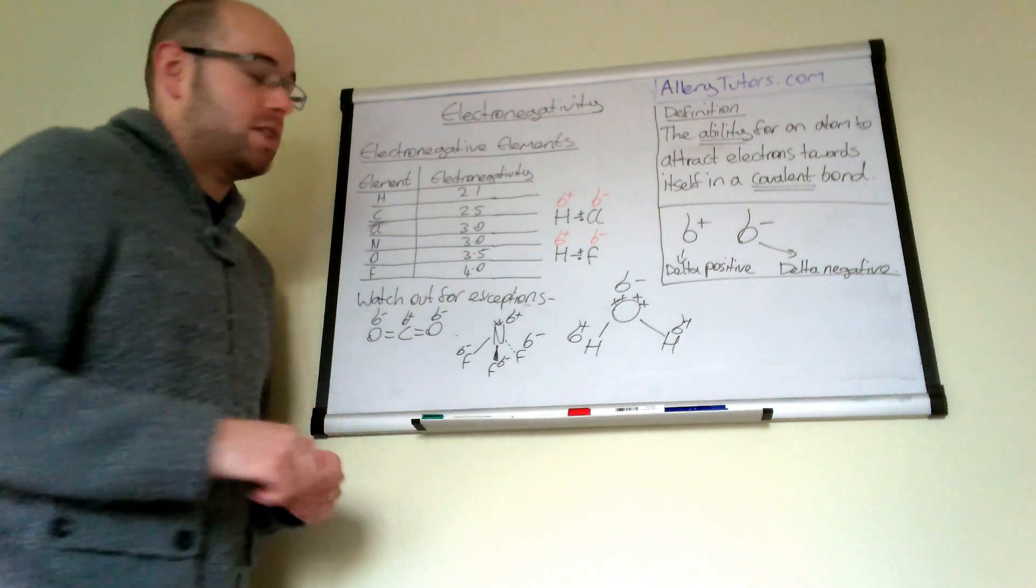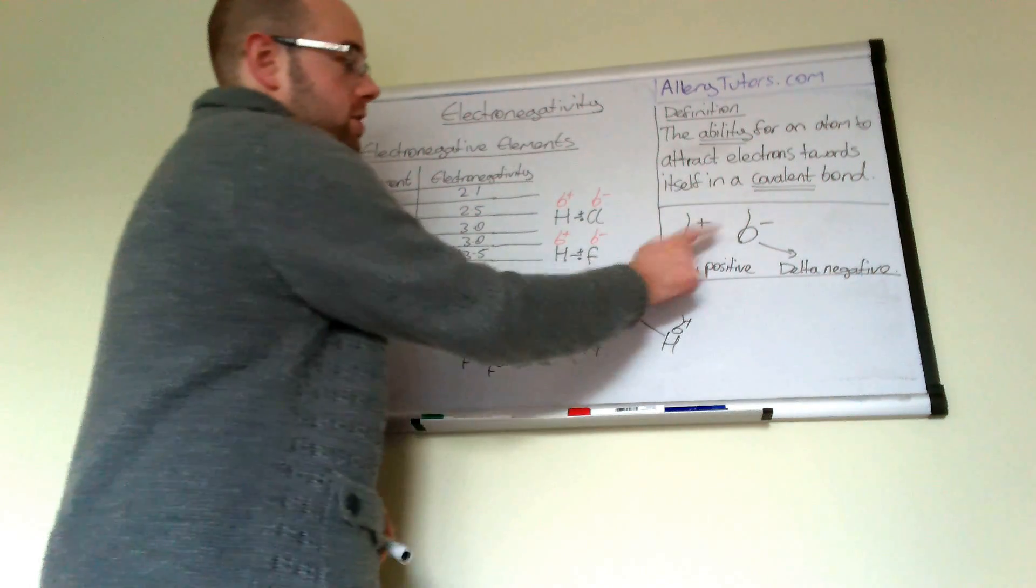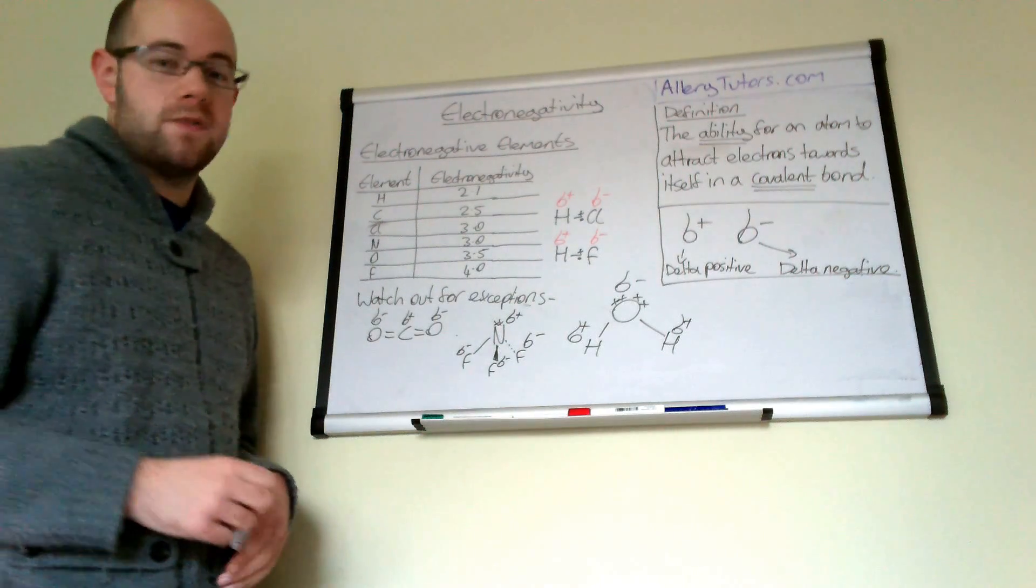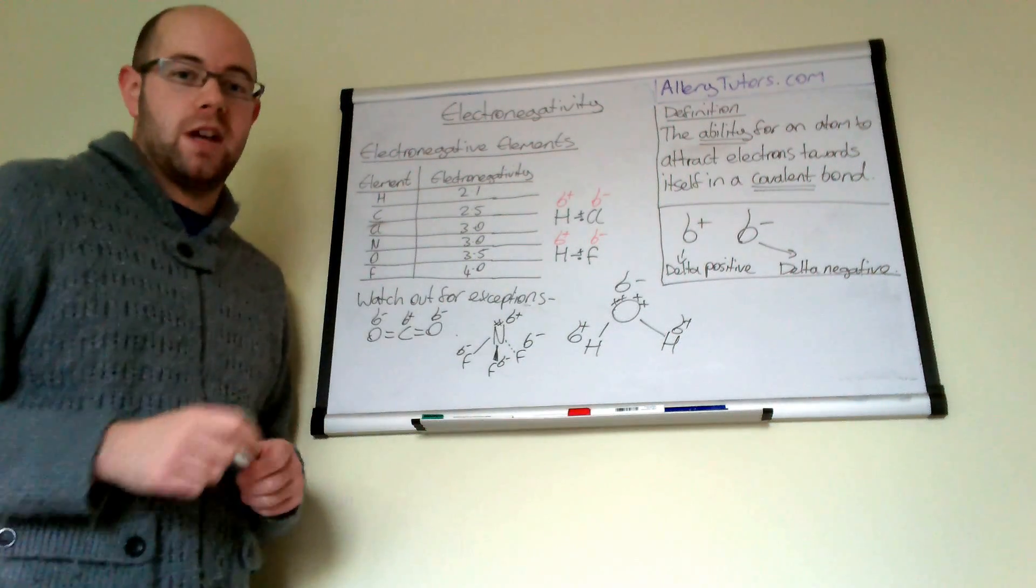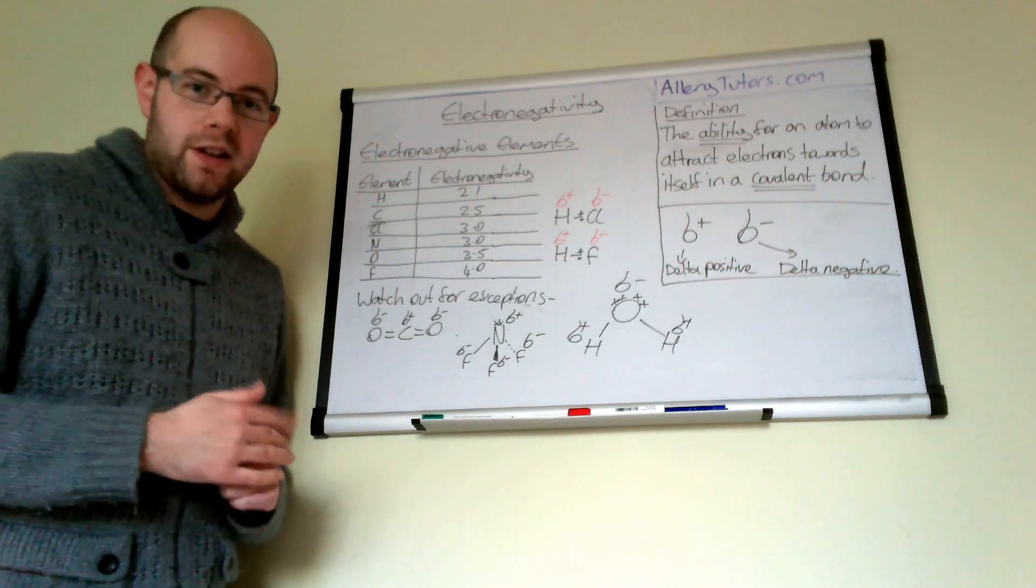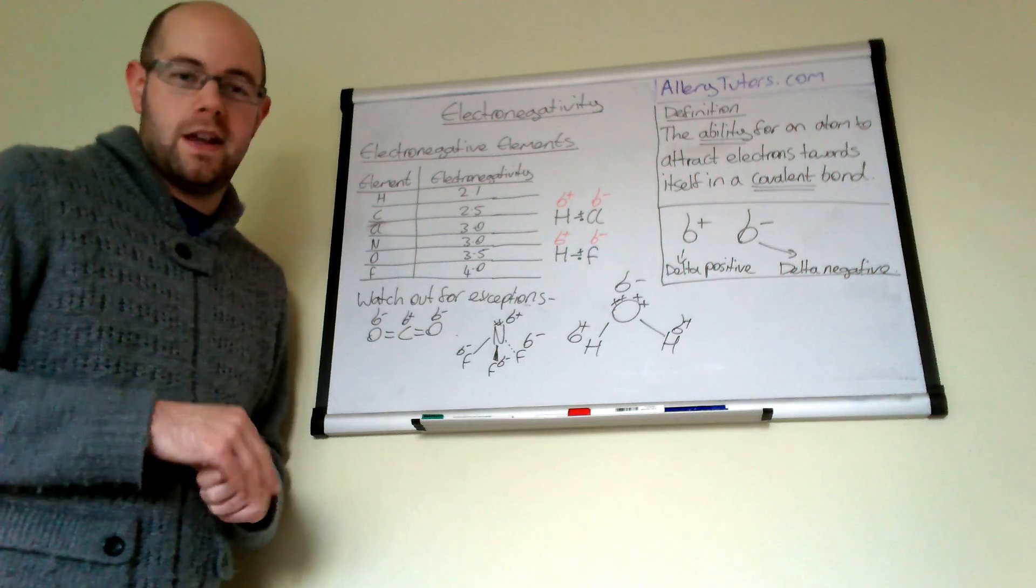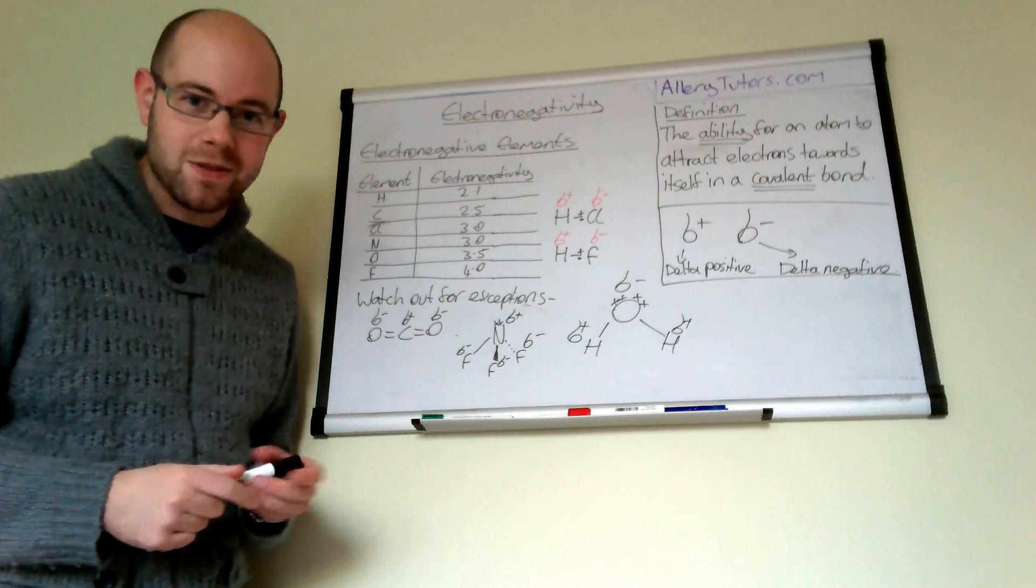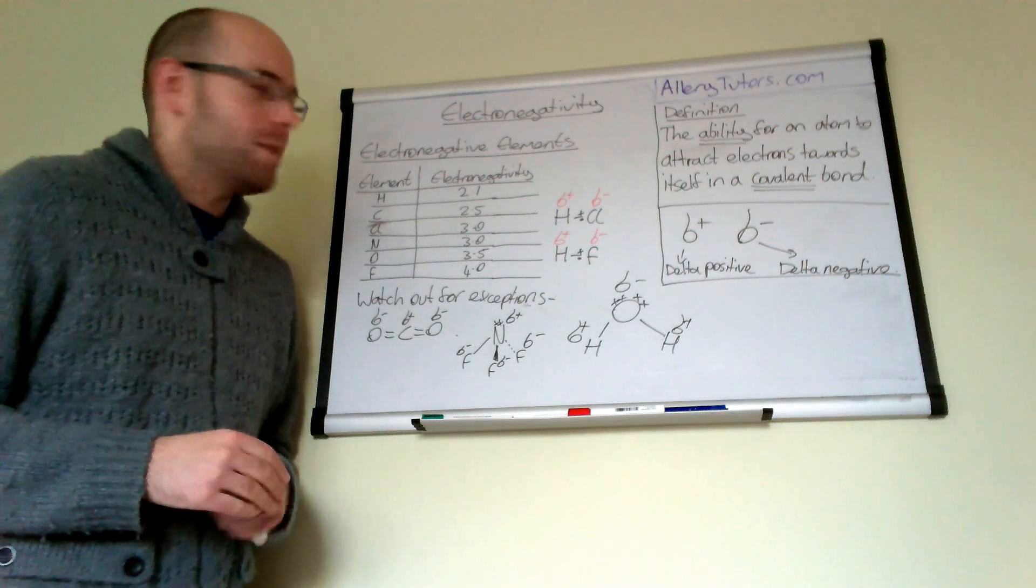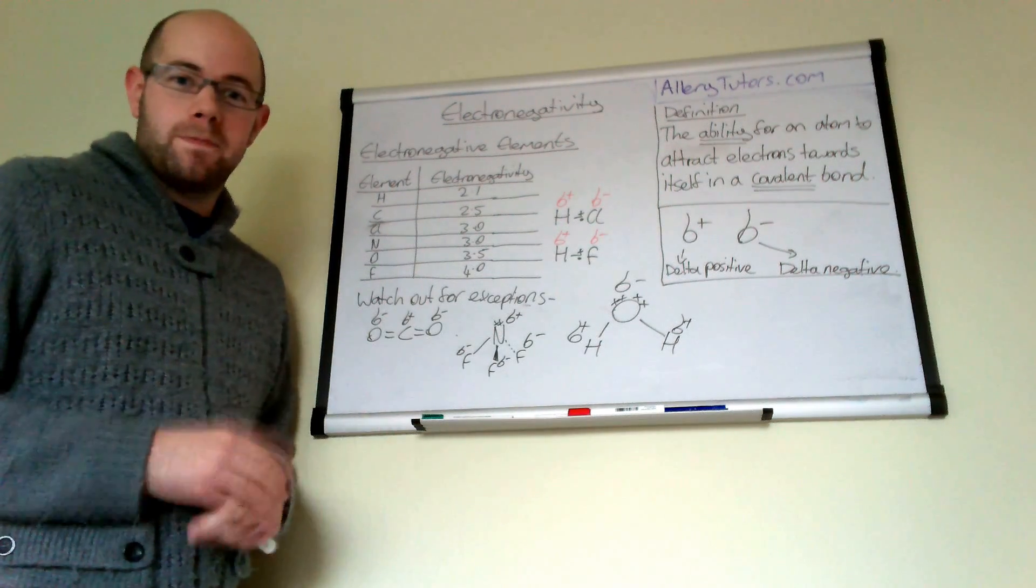This is electronegativity. You need to know the symbols like delta positive (δ+) and delta negative (δ-), and the definition is crucial. If you understand this concept, it will help you massively for later ideas in AS and A2 chemistry and even if you want to do a degree in chemistry. That's it, bye!